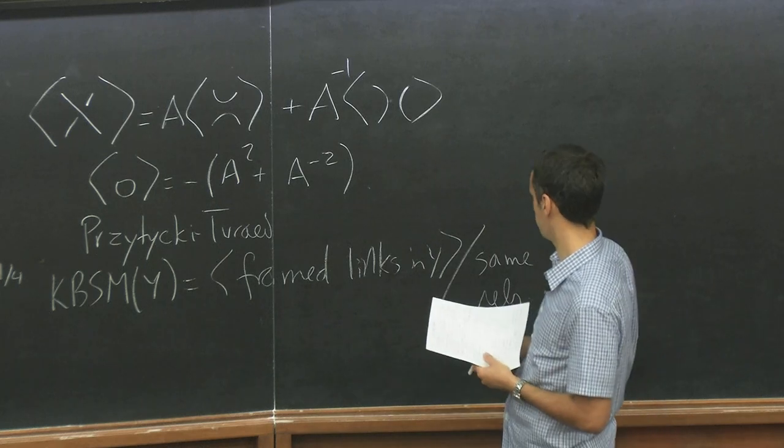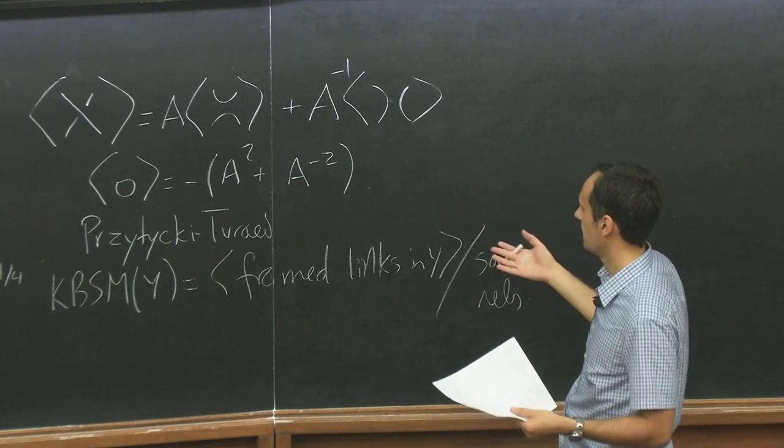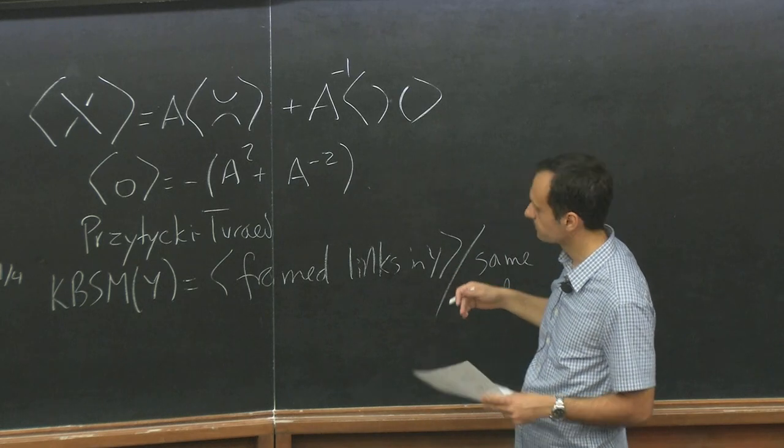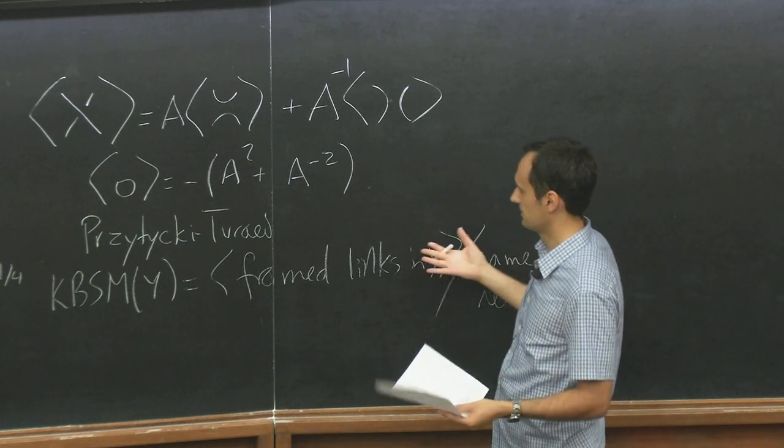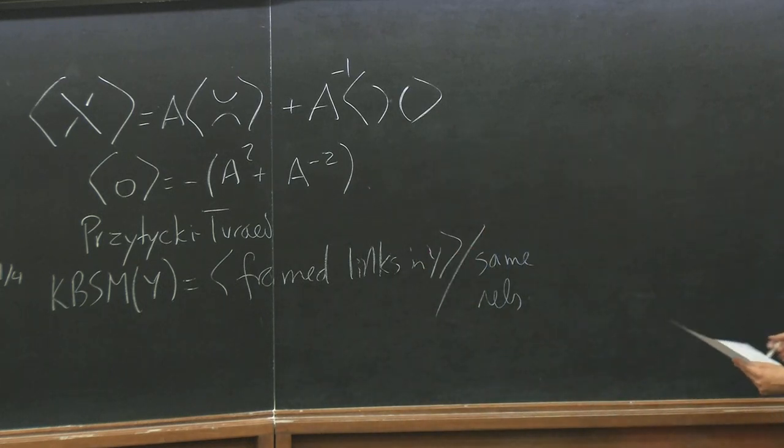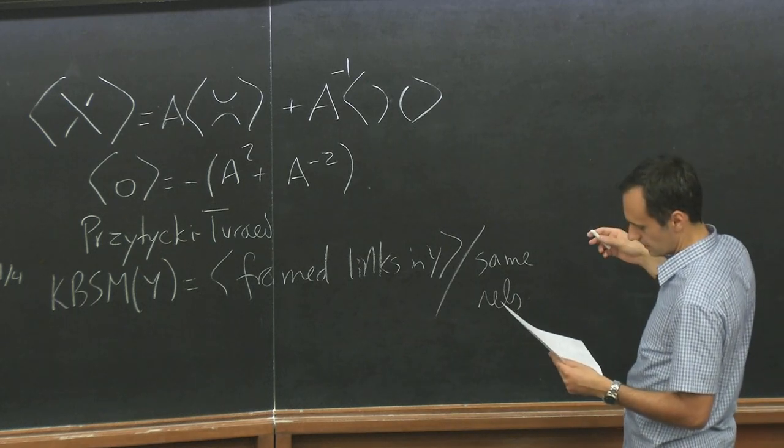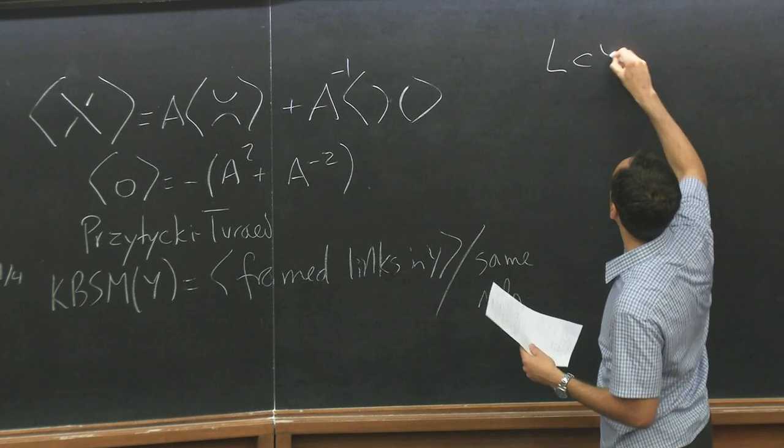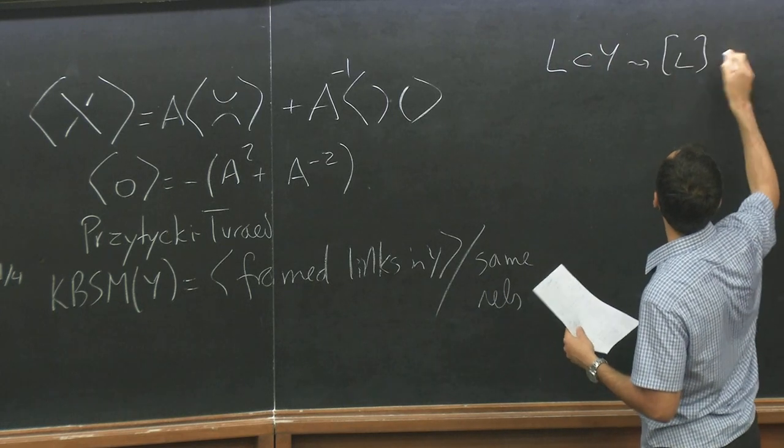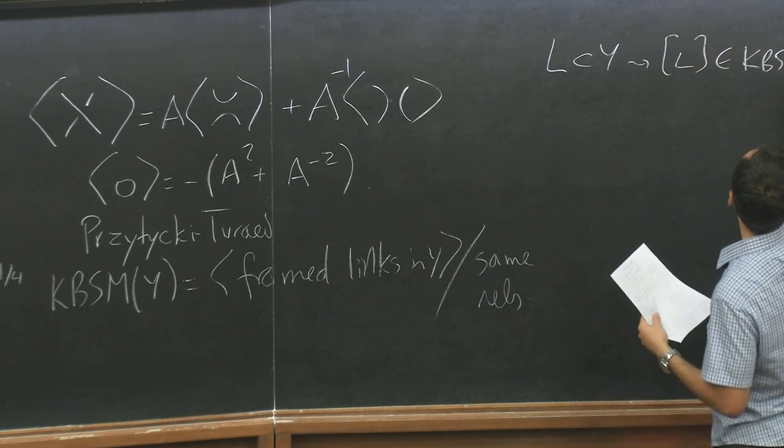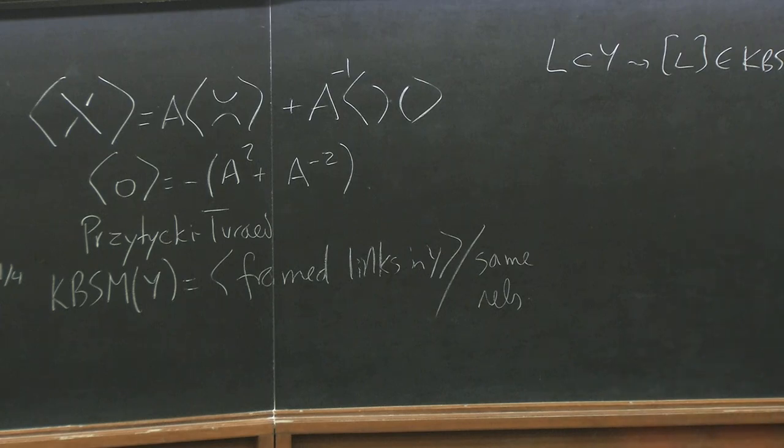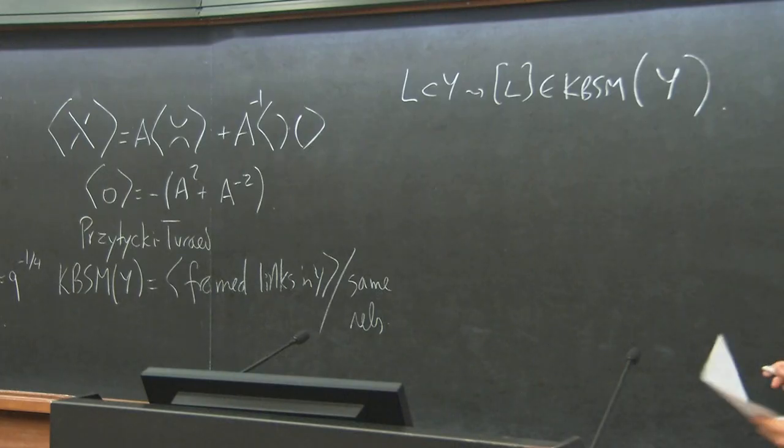In R3, it's easy to show that this determines a polynomial. In general, well, you can make a vector space, or a module over Z A A inverse. And just define this and see what happens. So then if you have a link, then of course you get some element in this skein module.